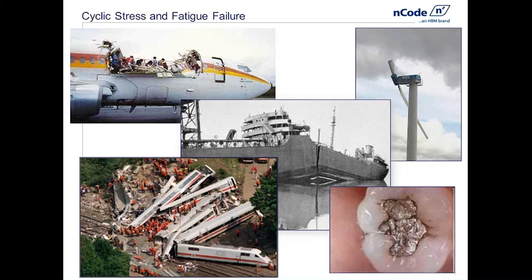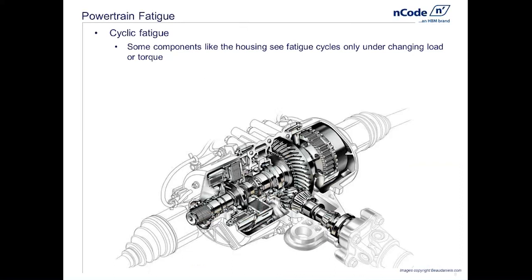We need to be able to understand what cyclic stresses result in use on any type of component. On the powertrain side, we're going to look at two different modes or domains of fatigue. The first is the classic or cyclic fatigue case — for example, the housing that keeps all the gears together. It sees stress cycles because of changes of load, displacement, temperature, or torque. This is the classic sense where we use rain flow cycle counting to count how many cycles occurred and how big they were, so we can estimate fatigue life.